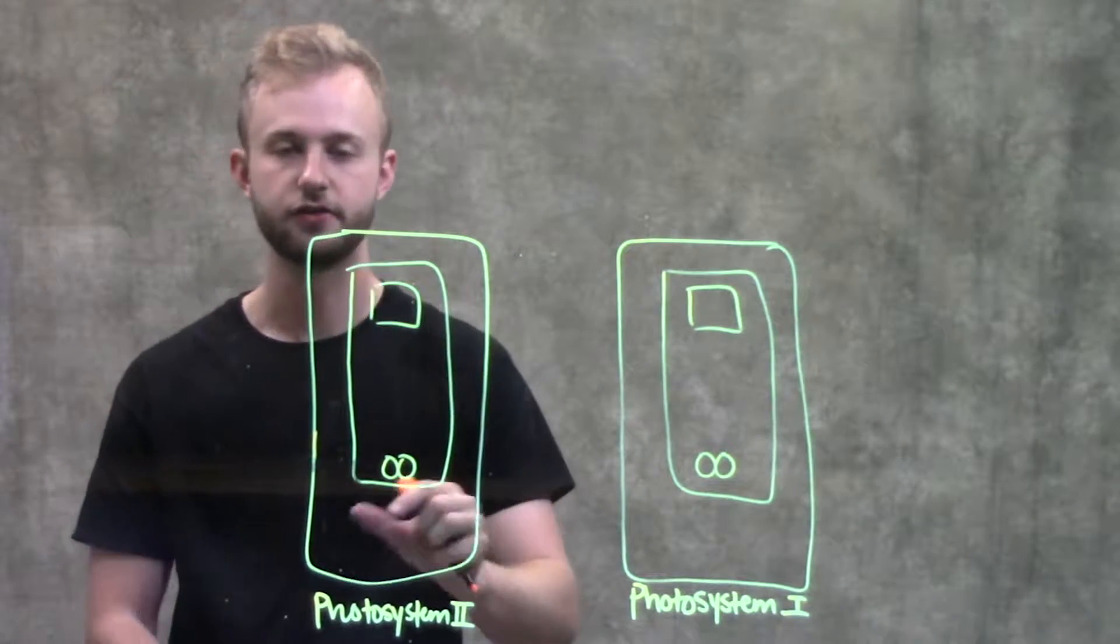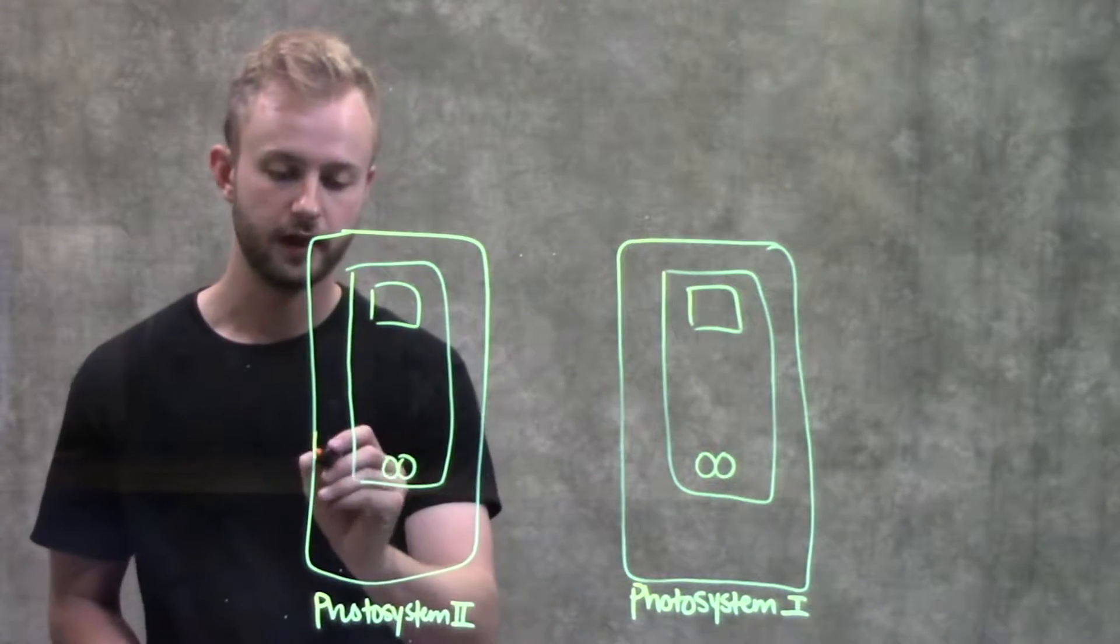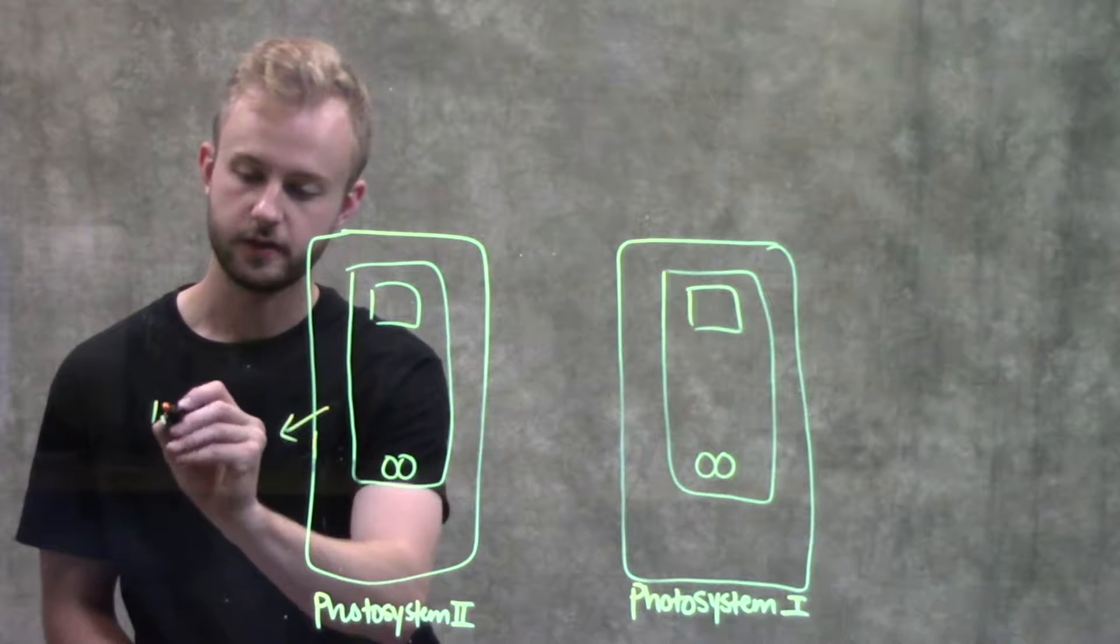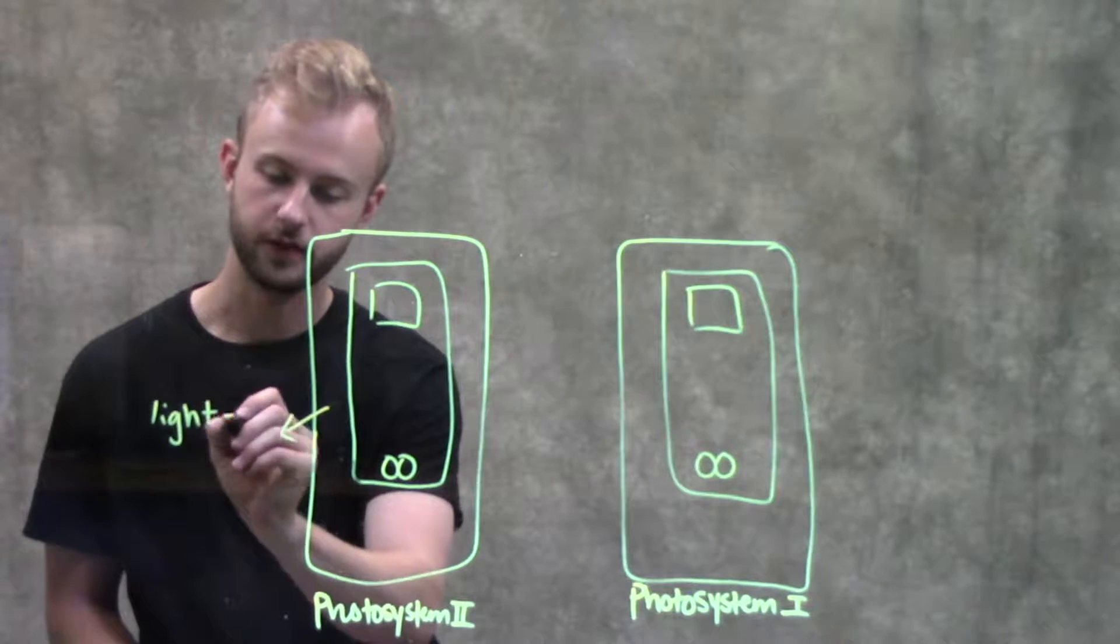You can see that it's divided into two main parts. Out here on the outside is going to be our light harvesting complex.